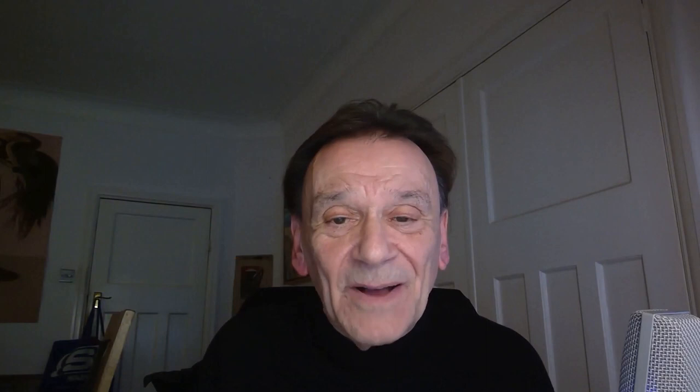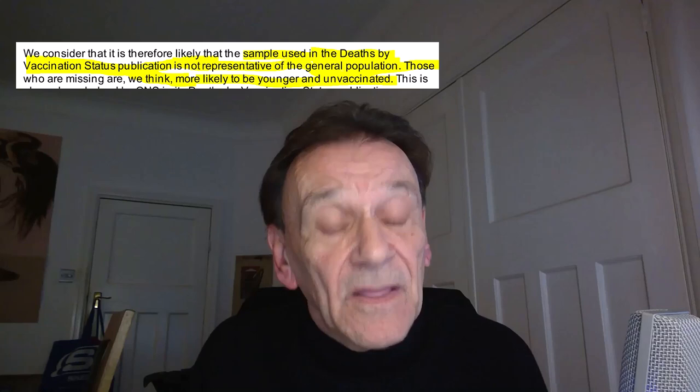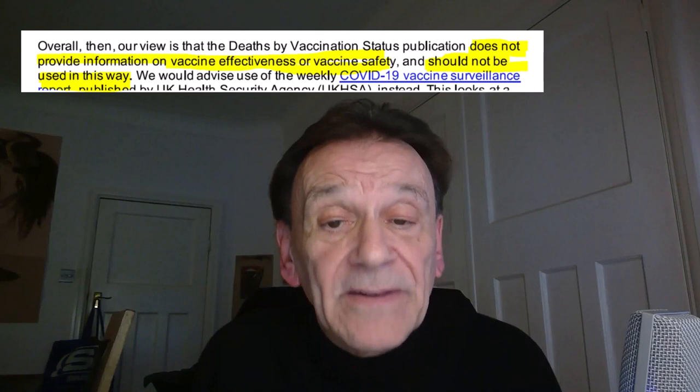Anyway, on Friday, after two months, we eventually got the response from the statistics regulator. And on two very key points, they absolutely agreed with us. They agreed that the sample the ONS was using was not representative of the general population, and they explicitly agreed with us that it underrepresented those unvaccinated. But then critically, what they actually said was that those reports do not provide information on vaccine effectiveness or vaccine safety and should not be used in this way — which is exactly what we were saying.